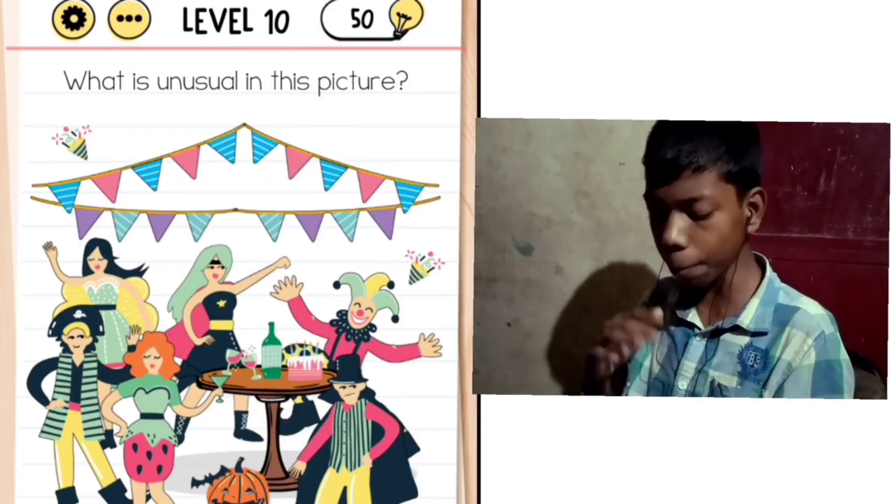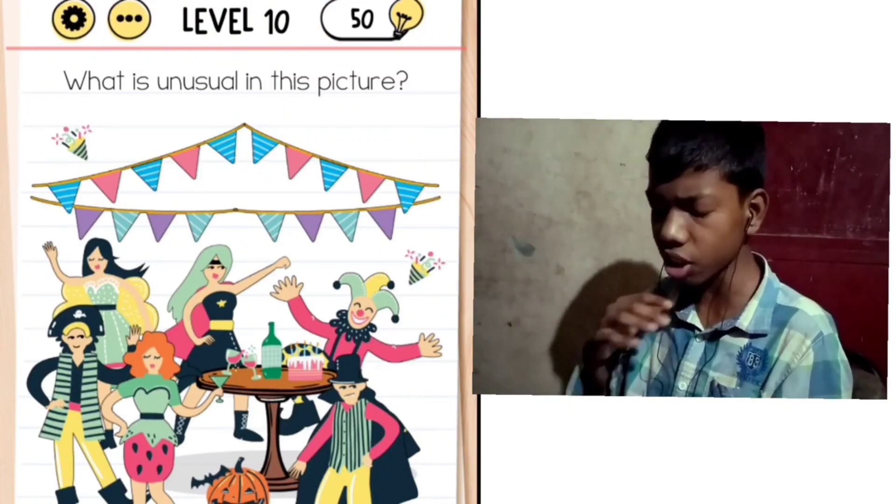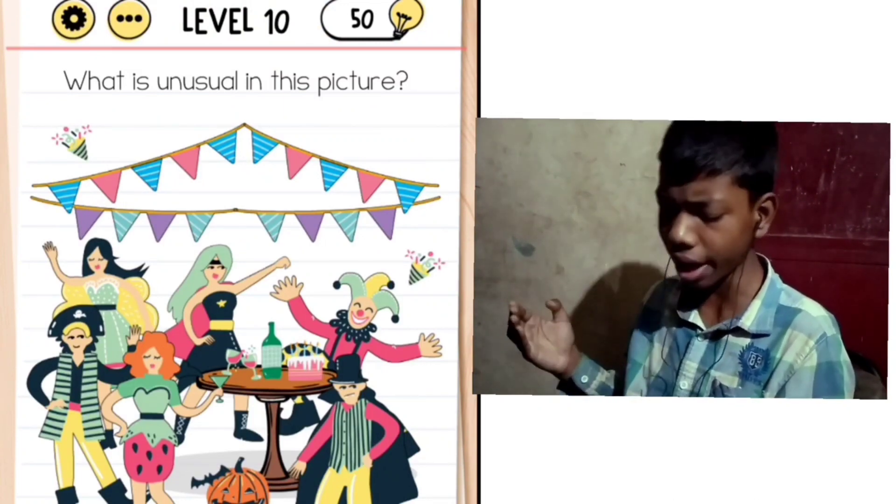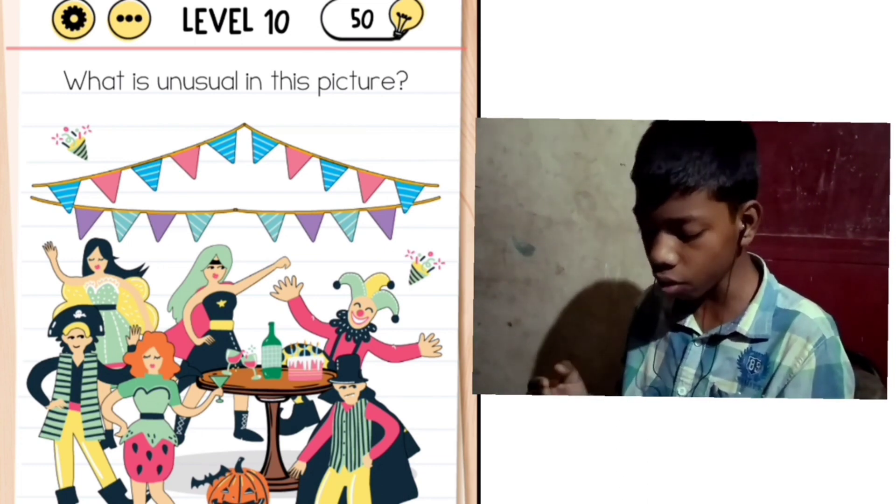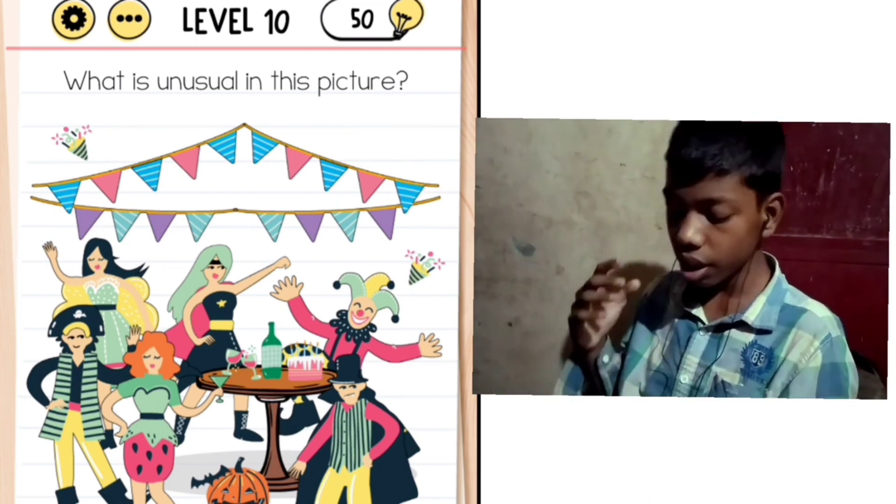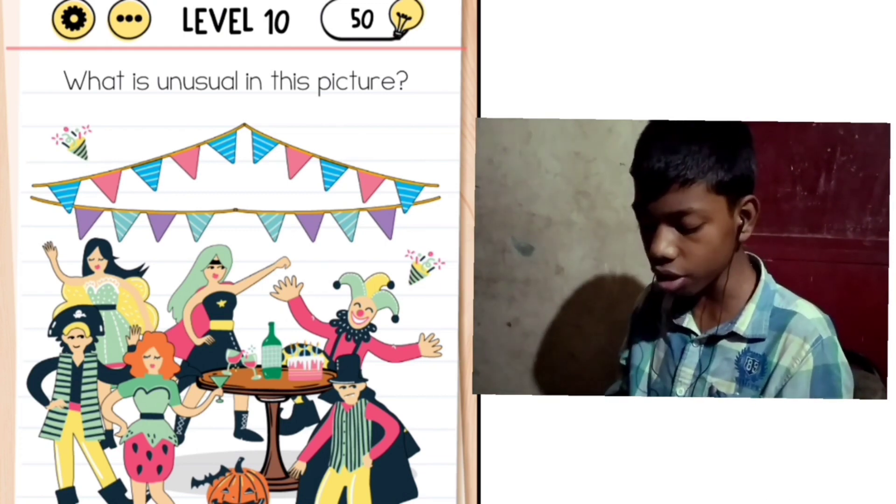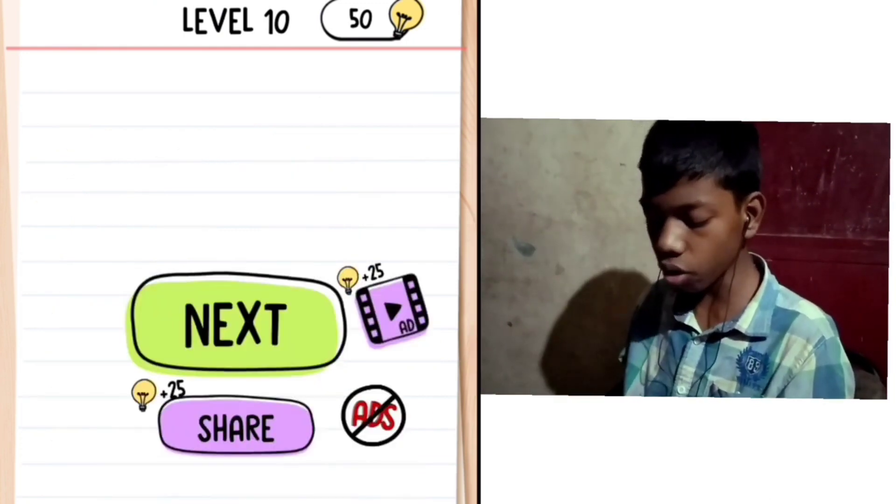Level 10: What is unusual in this picture? Here's a picture where there's a party and we have to find what's unusual. Look at all the details. I think the joker is dancing. What about the joker's finger? The joker has six fingers. I think that's unusual and it's simple. Next level.